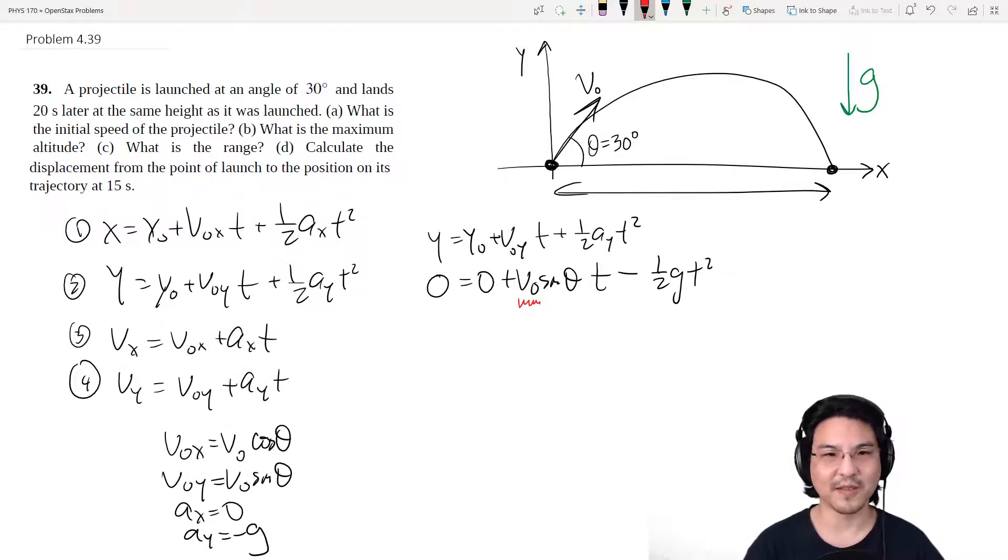g, 9.8. So look, there's only one unknown, so you just solve for that one unknown, V-naught. Over sine theta, T.